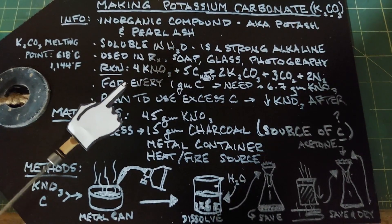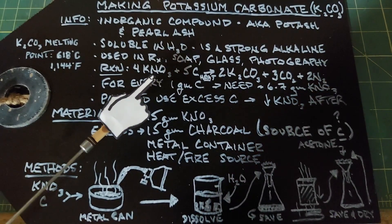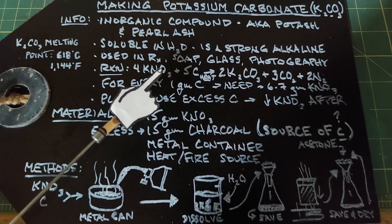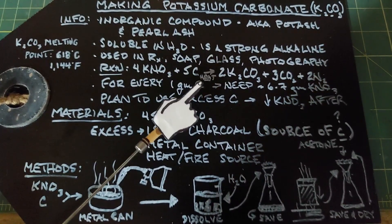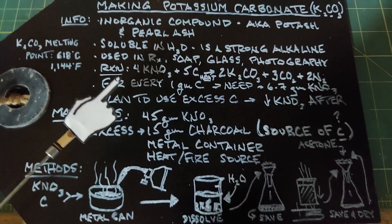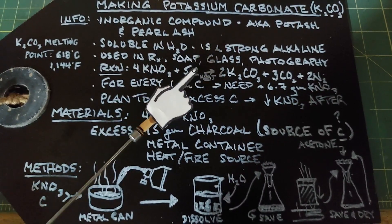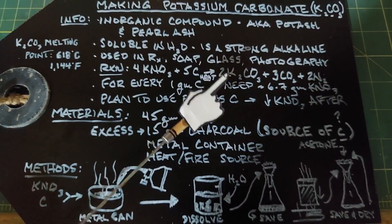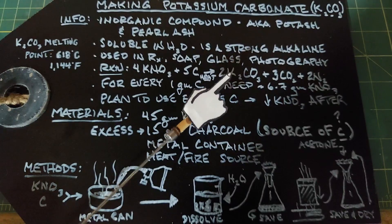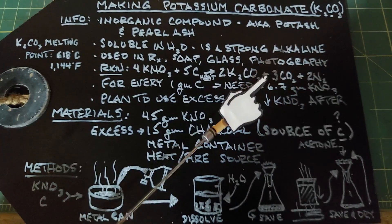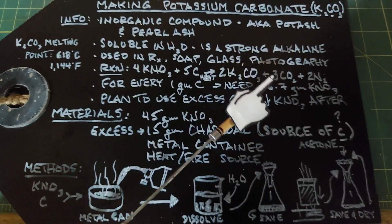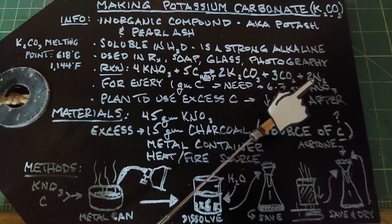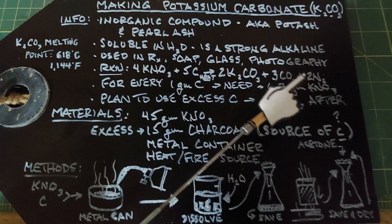The reaction we're going to perform involves potassium nitrate (KNO₃) and carbon. The equation is: 4 KNO₃ + 5 C + heat → 2 K₂CO₃ + 3 CO₂ + 2 N₂, where the nitrogen gas is also a byproduct.